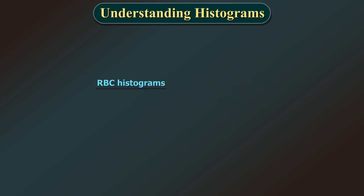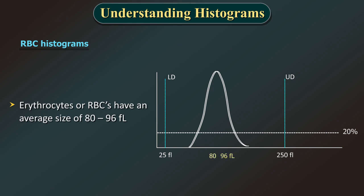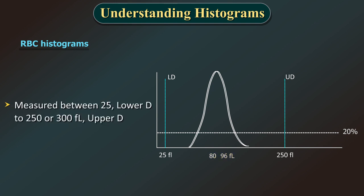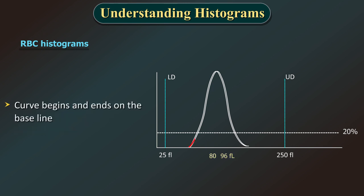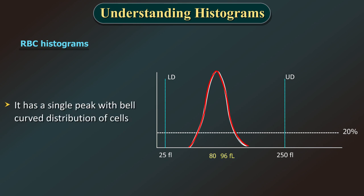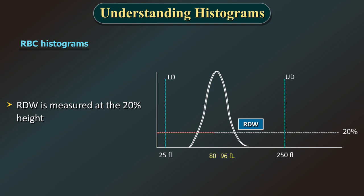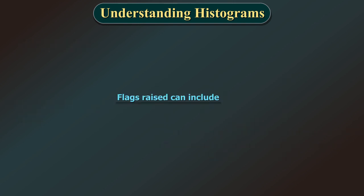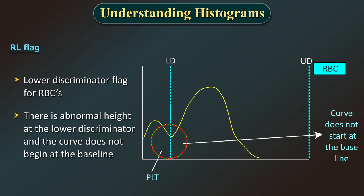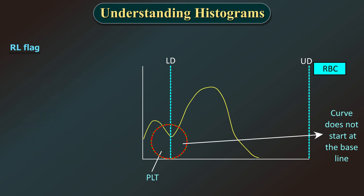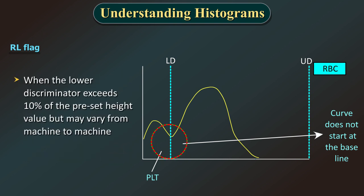RBC Histograms: Erythrocytes or RBCs have an average size of 80–96 femtolitres and are measured between 25 FL (lower discriminator) to 250 or 300 FL (upper discriminator) as per the analytical system used. The normal RBC distribution curve lies between these two discriminators. The curve begins and ends on the baseline, has a single peak with bell curve distribution, and the RDW is measured at the 20% height. The RL flag (lower discriminator flag for RBCs) indicates abnormal height at the lower discriminator — the curve does not begin at the baseline. This generally happens when the lower discriminator exceeds 10% of the preset height value.